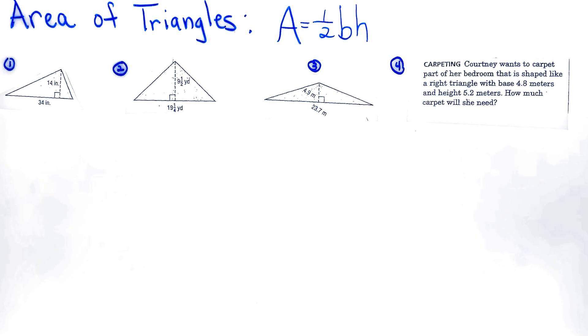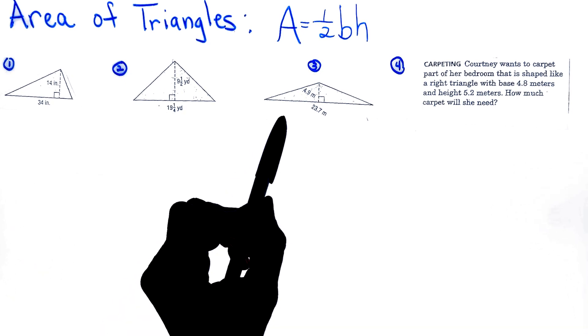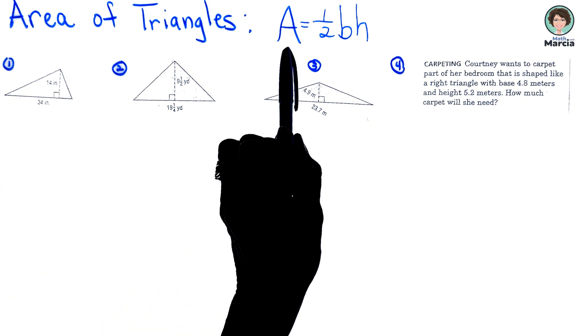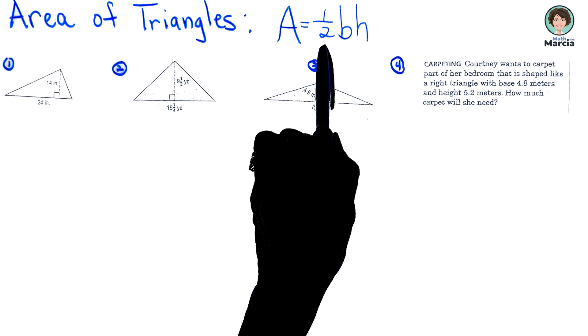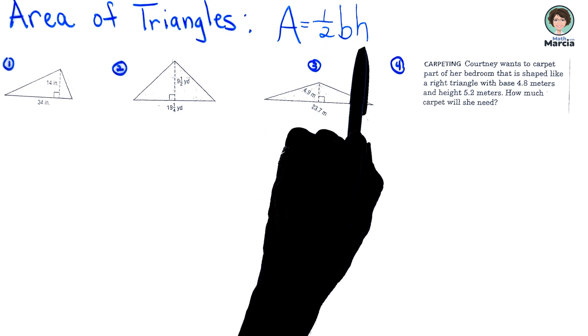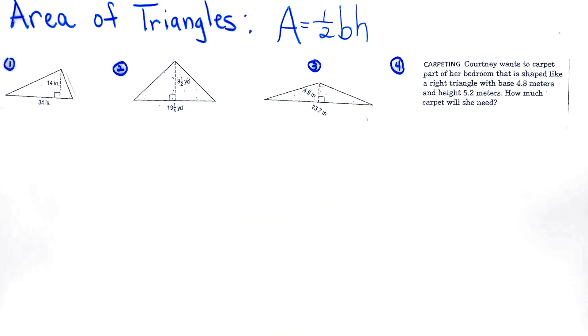For this lesson we are finding area of triangles and the formula that we will be using is area is equal to one-half the base times the height. Remember the height must always hit the base at 90 degrees.